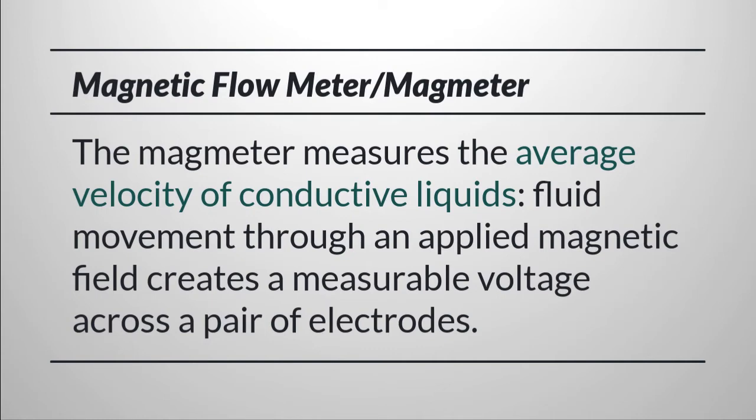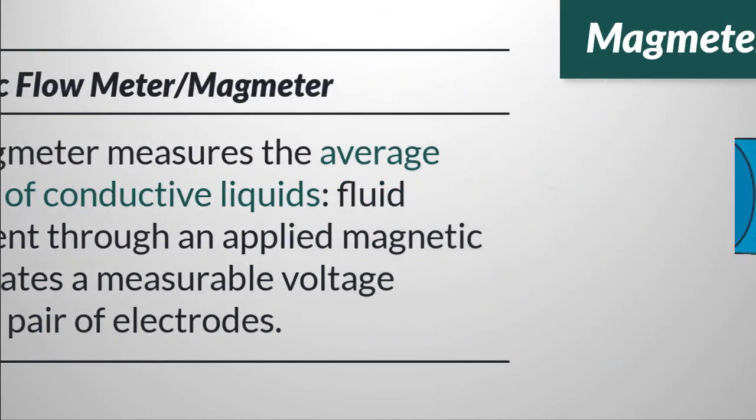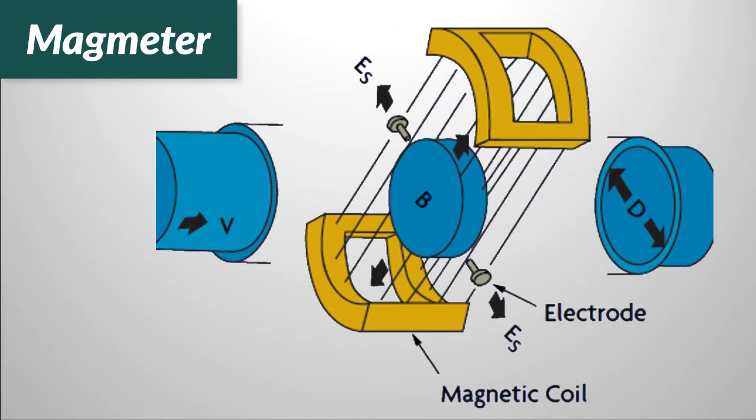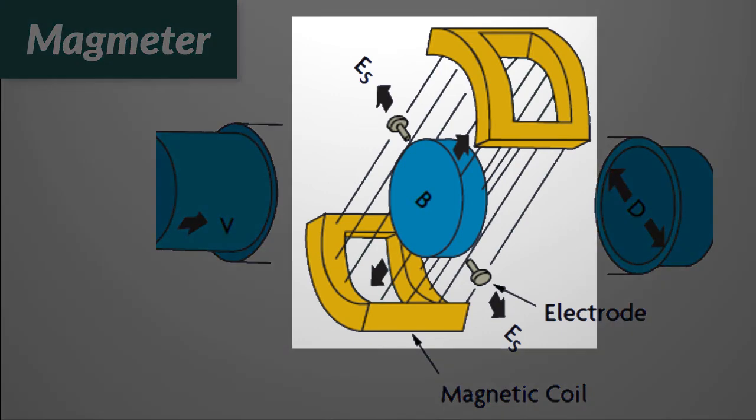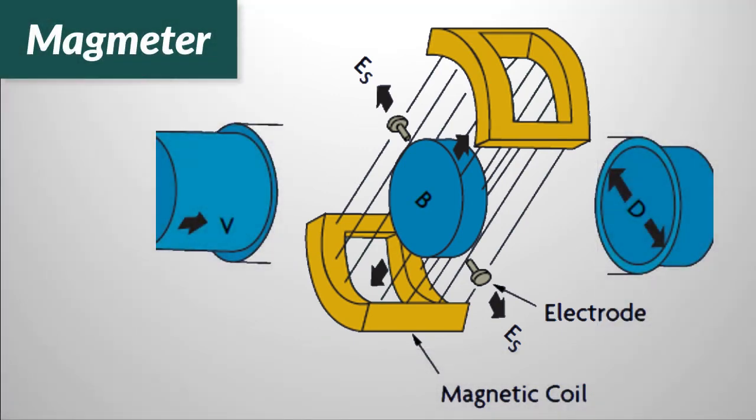The magnetic flow meter, or magmeter, works only with conductive liquids such as aqueous solutions. It consists of a non-magnetic pipe lined with an electrically insulating material. As shown here, a pair of coils generates an electric field and the motion of the conductive fluid through the field generates an electric potential or voltage between the electrodes proportional to the velocity of the fluid.